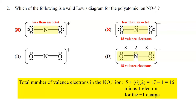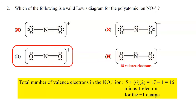Now that we've eliminated choices A, C, and D, the correct answer to question 2 is choice B. Counting the valence electrons gives 16 total, and if you look closely, there are no violations of the octet rule for any of those atoms. So the correct answer to question 2 is choice B.